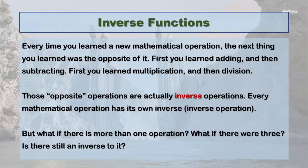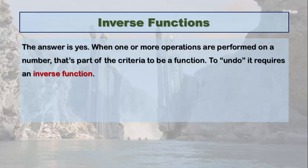But what if there's more than one operation? What if there's a problem that involves three operations: multiplication, addition, and squaring? Can there still be an inverse to it? And the answer is yes.